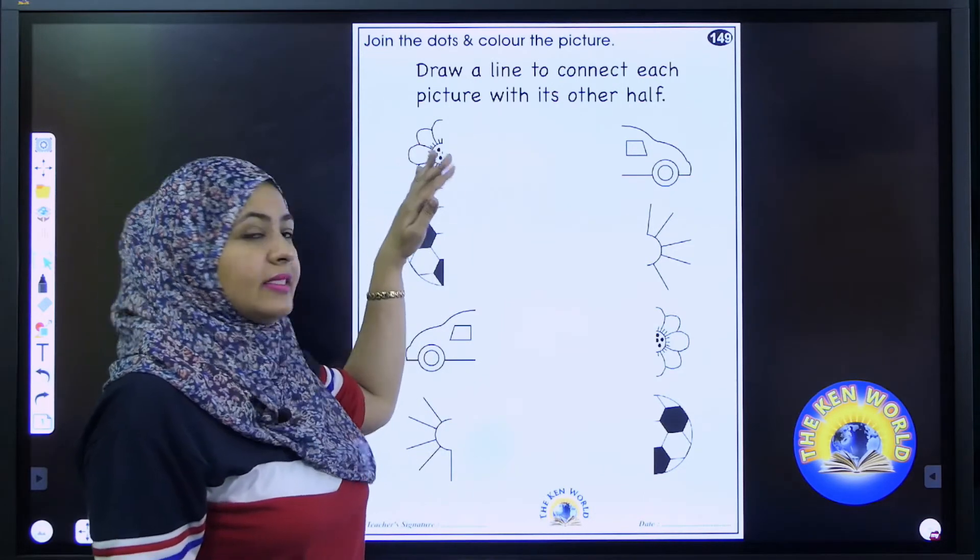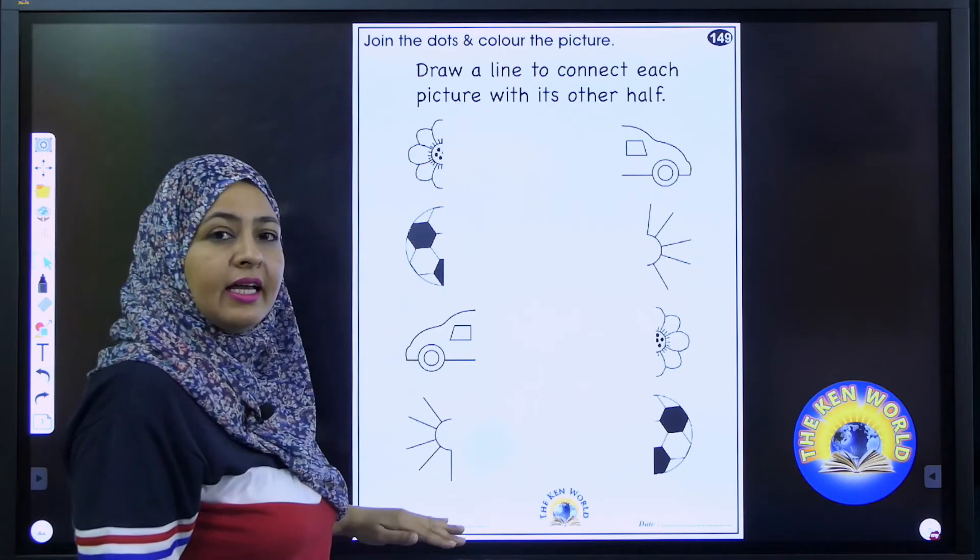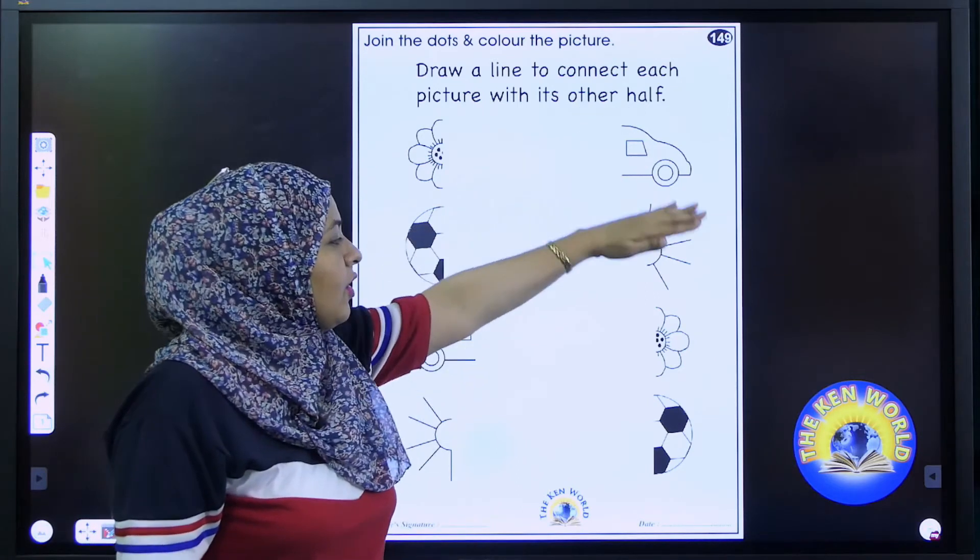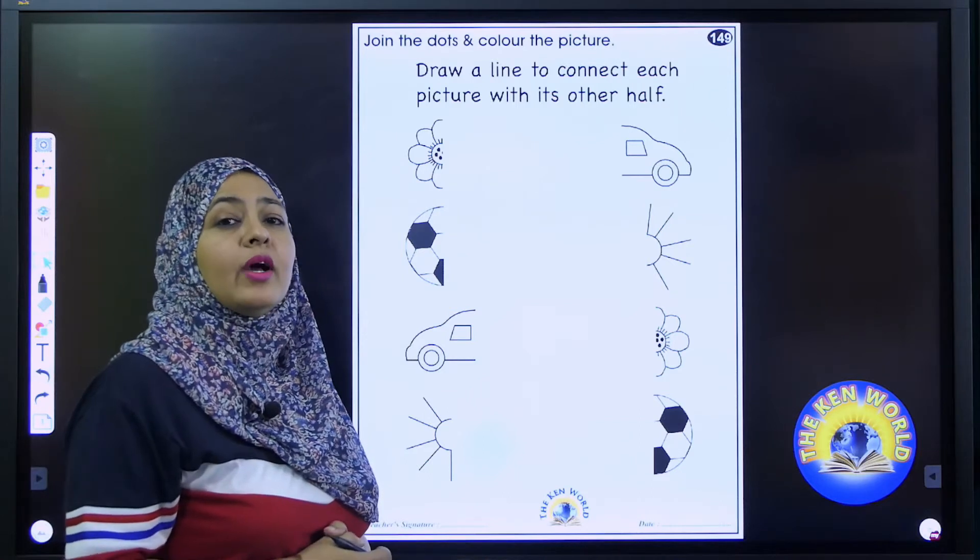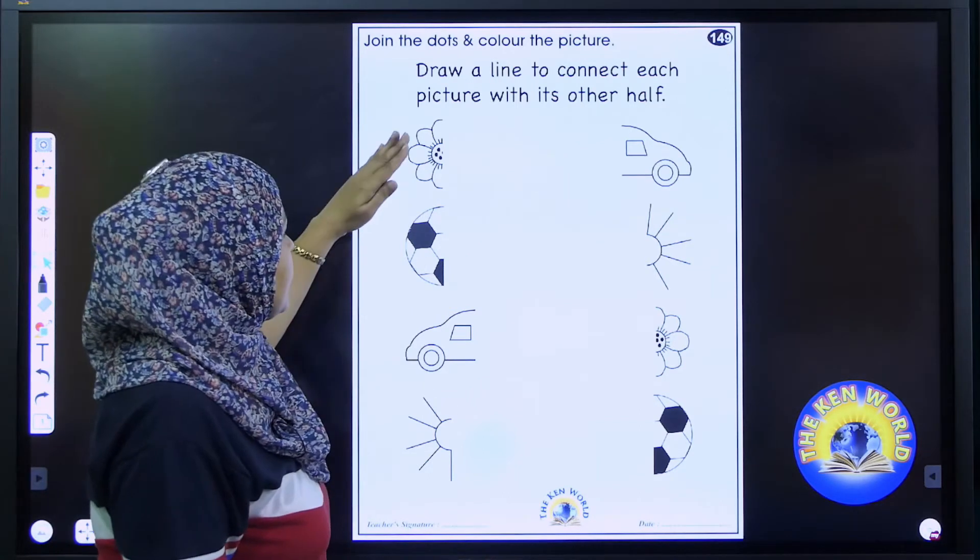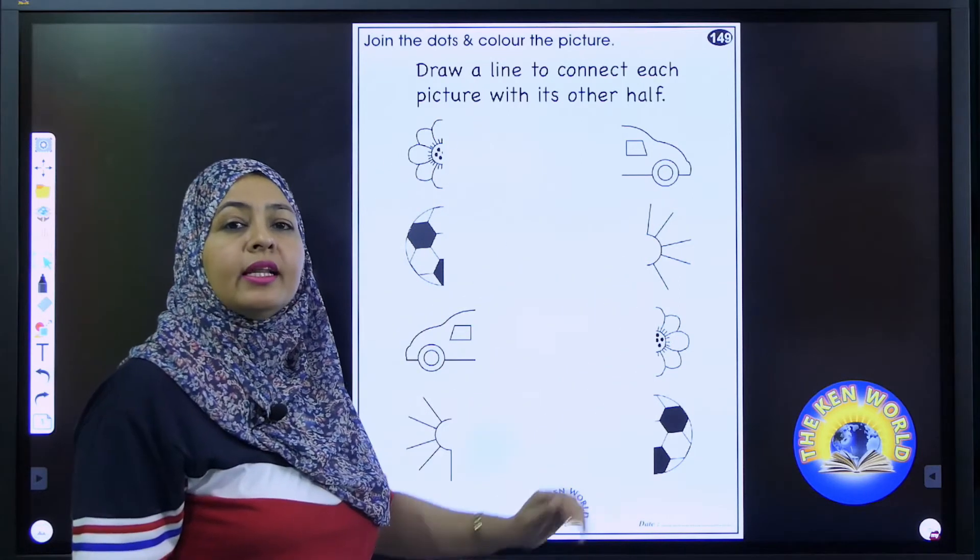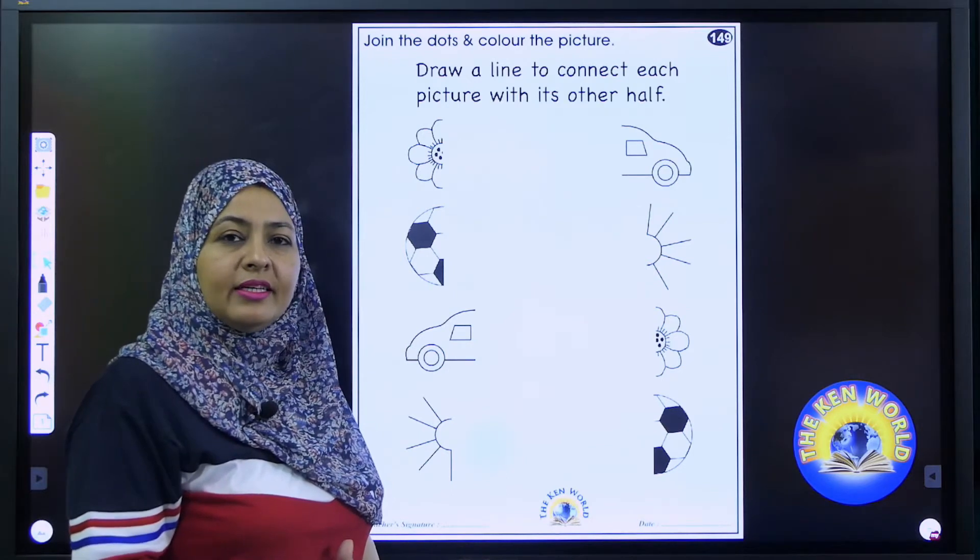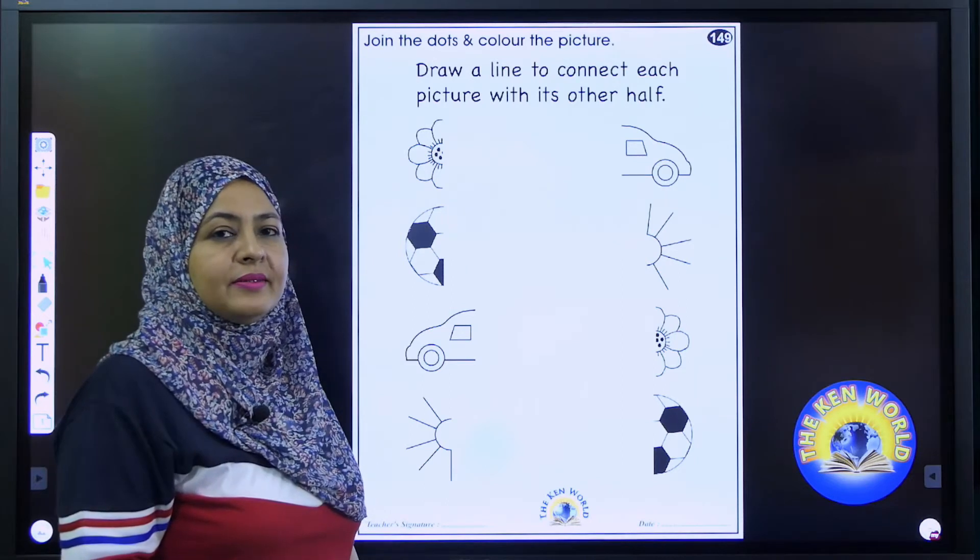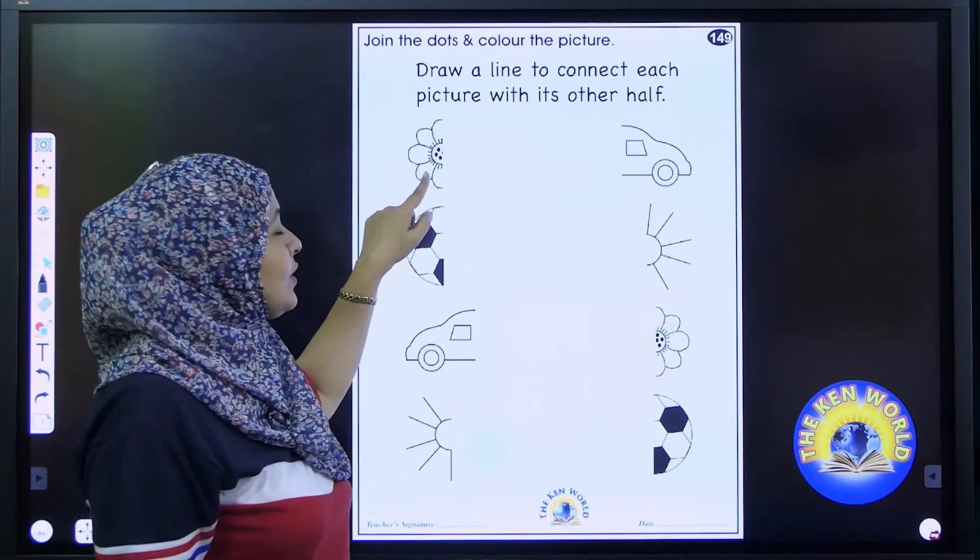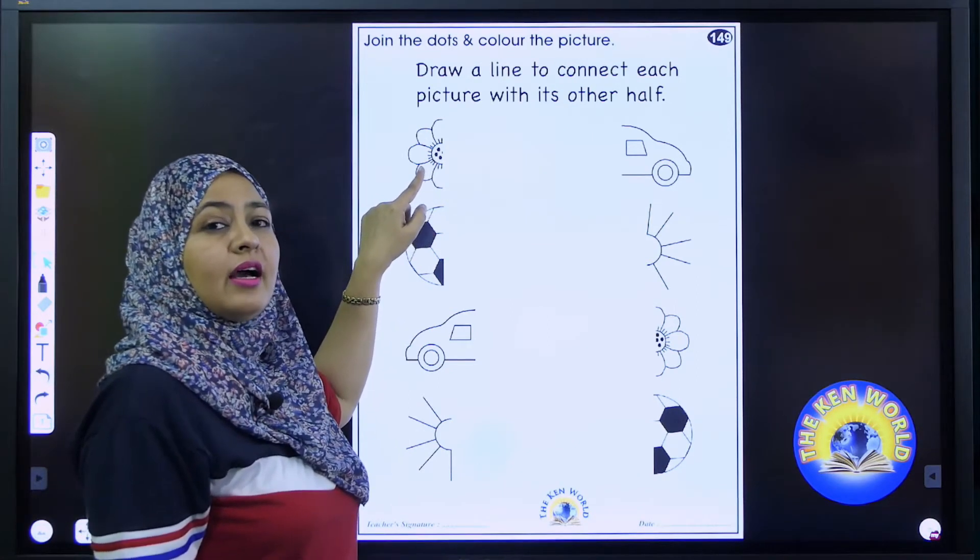Here you can see the picture. You can see half of the picture on this side and half of it on other side. What you have to do? You have to connect them. You have to connect half of the picture with its other half by drawing a line. Are you ready? Yes. Then take out your sharpened pencil. And tell me which picture is this?